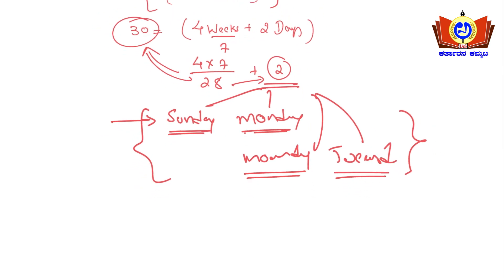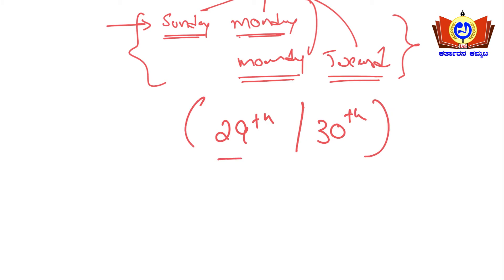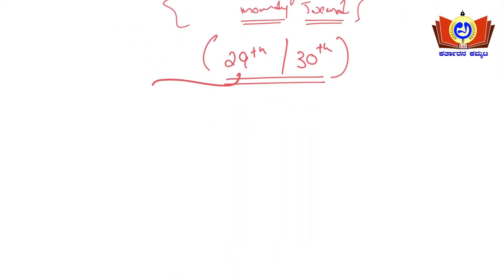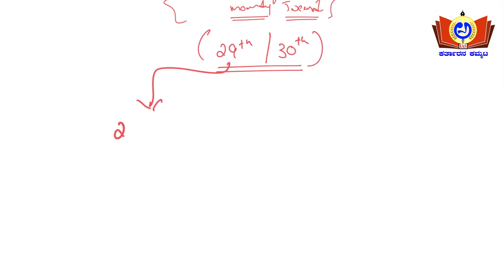The date of the 5th Monday can be either 29th or 30th. If April starts on Sunday or Monday, there are two possibilities. For each case we need to solve further. Let's first take: 29th April is on Monday.